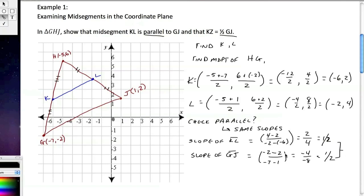So same slopes. So KL and GJ are parallel. Which means this one is good to go.